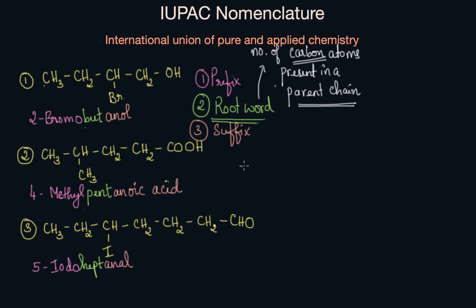For example, if I represent the carbon chain as one, two, three, four, five — these are five carbon atoms in the form of a chain, and the five carbon atoms become the root word.